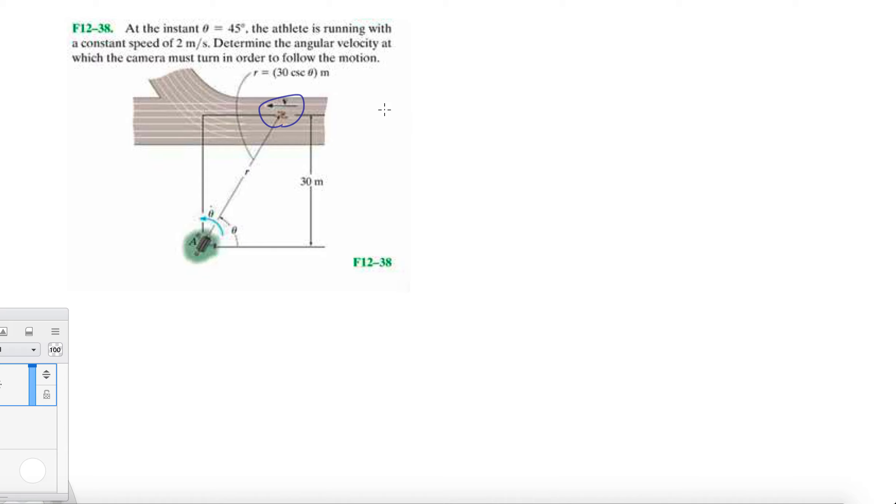Here they give me a few clues. The athlete is running with a constant speed of two meters per second, so V is two meters per second. That means the camera's speed - it's not the velocity, it's the speed, so it's just the magnitude of multiple components.